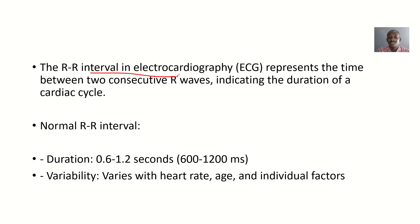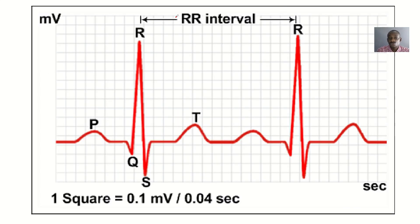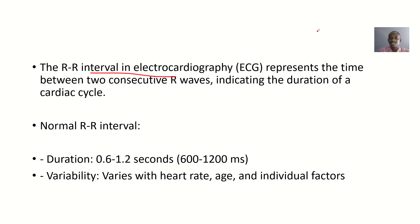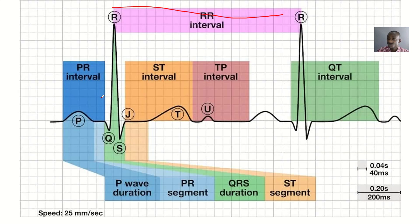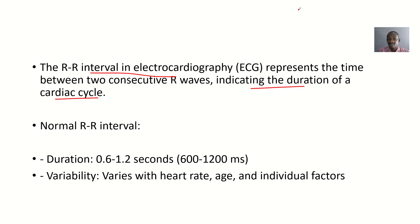The R-R interval in electrocardiography represents the time between two consecutive R waves — the time it takes to move from the R wave in one QRS complex to the nearest R wave. Consecutive means they are following each other. It represents the duration of a cardiac cycle, from one depolarization to another depolarization.